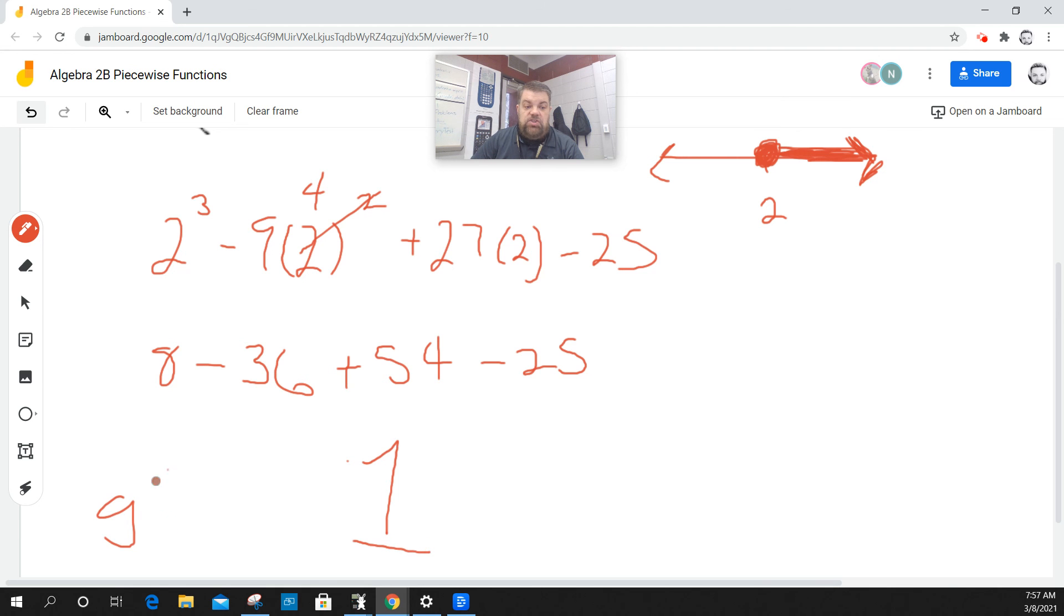So what I'm saying is that g of 2 is equal to 1. That means that the point 2 comma 1 exists on the graph. That's it on that one.